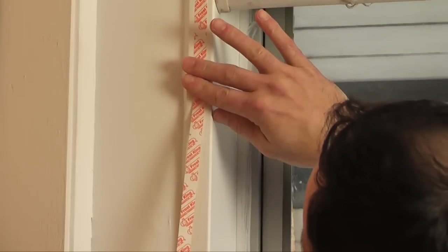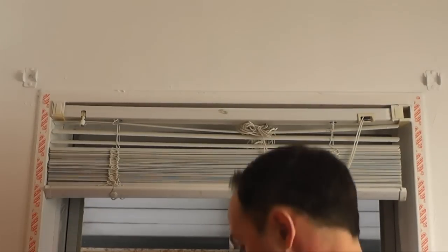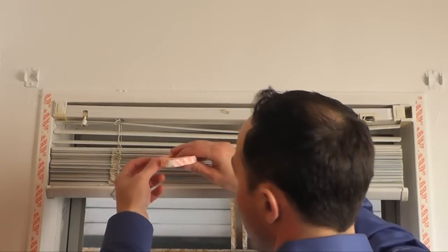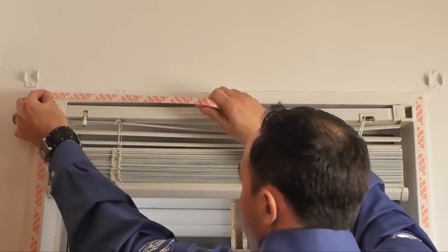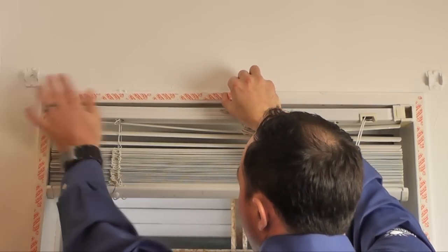So you don't gum up the tape, I find it easier to work in small sections. Pull back a section of one side of the backing. Firmly apply the tape around the window frame. Then pull back another section of the backing and continue to apply the tape around the window.